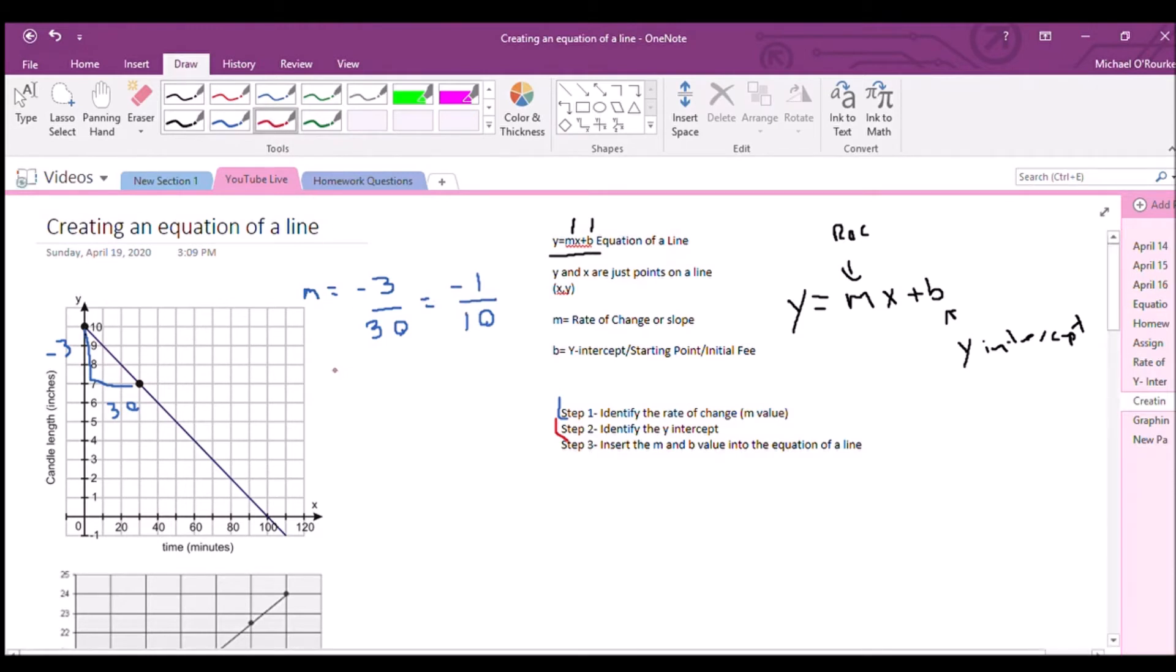Now our B value is where it crosses the Y intercept. And we did this last time, which is 10. So then we have those two numbers. So what we're going to do here is we go Y equals, I'm going to leave these two spots blank. The two spots I'm leaving blank are this spot and this spot. And we're just going to replace those with the numbers. So in this case, what's going to go here is negative one over 10. And what's going to go here is 10. So there's our equation. Y equals negative one over 10 X plus 10. And we're done.